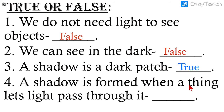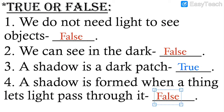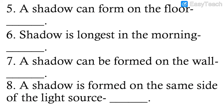Number four: A shadow is formed when a thing lets light pass through it — this is wrong and false. A shadow is formed when the thing does not let the light pass through it; when an object blocks the light, the shadow is formed. Here the statement says a thing lets light pass through, so it is false.